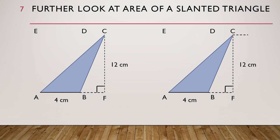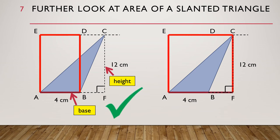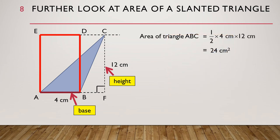Note that when we draw the related rectangle of a slanted triangle ABC, it should start from one side of the triangle like this. This is the base, and this is the height of triangle ABC. We should not draw the related rectangle of triangle ABC the wrong way — think about what is wrong with that. Therefore, the area of triangle ABC is equal to half times base times height, which is equal to 24 square centimeters.